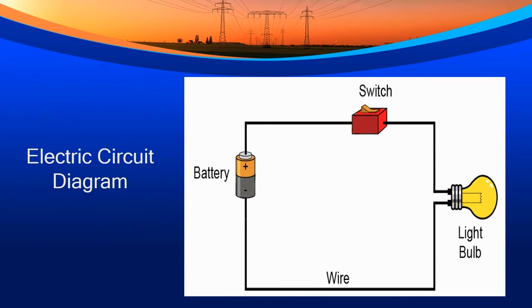Let us look at this diagram. You can see a switch, a battery, the wire, and a light bulb. Again — switch, a battery, wire, and a light bulb.